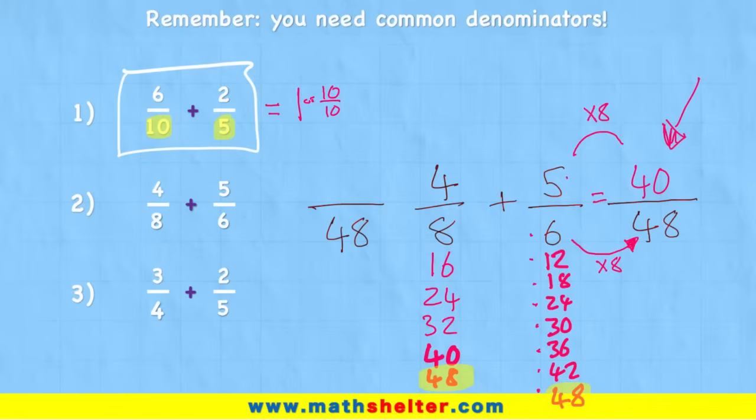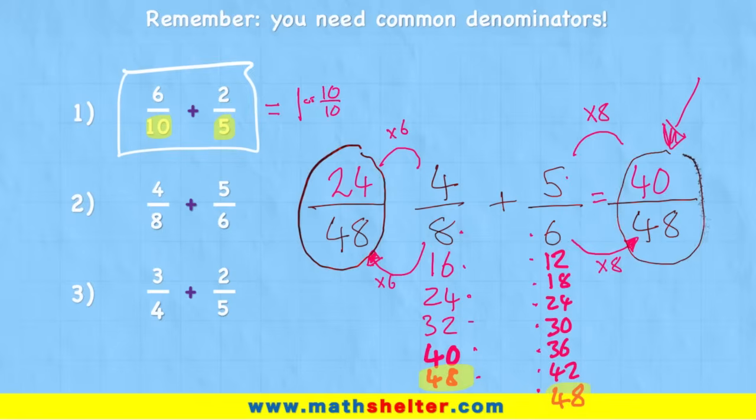Now let's do the other one on the other side. How did I get from eight to 48? Well, I have one, two, three, four, five, six. So I multiplied it by six. But if I multiply the denominator by six, to keep it equivalent, I need to multiply the numerator by six as well. And four times six is 24. Wow, a lot of work to get my two new fractions, 24 over 48 and 40 over 48.